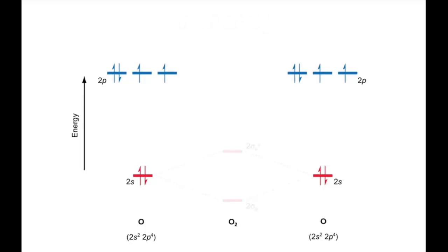The 2s orbitals interact together to form a sigma g bonding orbital and a sigma u antibonding orbital. The bonding orbital is lower in energy than the contributing atomic orbitals and the antibonding orbital is higher in energy.